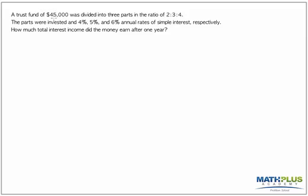So it starts off, there's a trust fund or an account with $45,000 that's divided into three parts in the ratio of 2:3:4. And then those parts are invested at 4%, 5%, and 6% interest respectively. We want to know how much is the total interest income the money makes after one year.